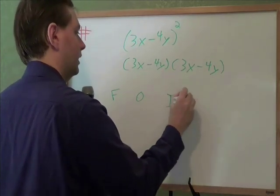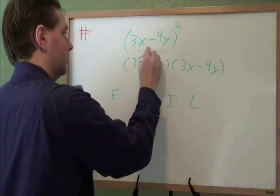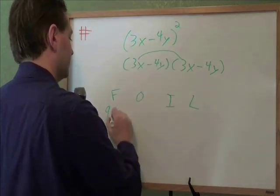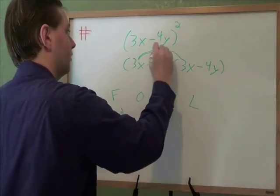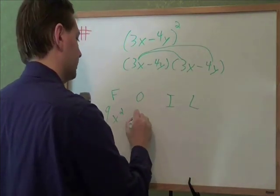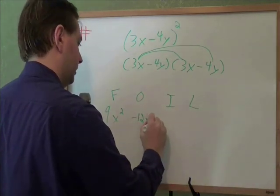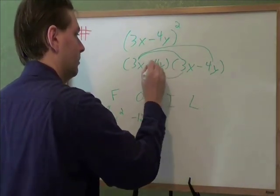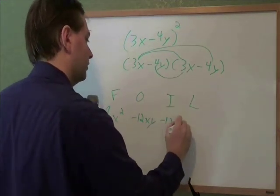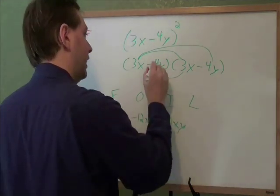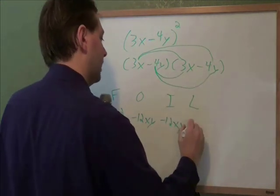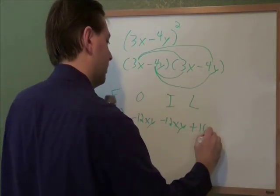First, outside, inside, last. Our first pair is 3x and 3x, 3 times 3 is 9, x times x is x squared. On the outside, we have 3x and negative 4y, 3 times minus 4 is minus 12, x times y is xy. On the inside, minus 4 times 3 is minus 12, y times x is xy. You generally put letters in alphabetical order. For the last pair, take the last of each of them, minus 4y times minus 4y is positive 16y squared.